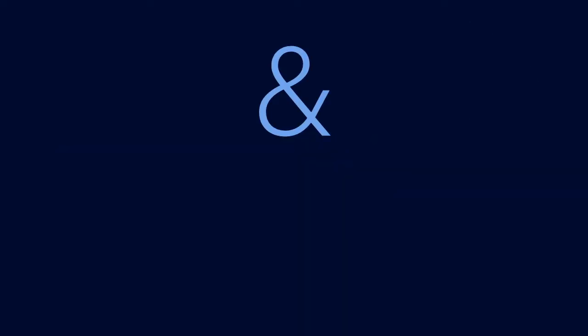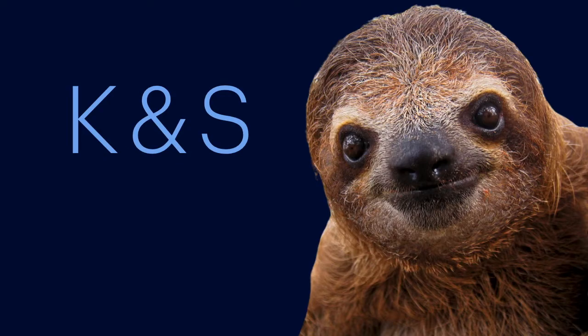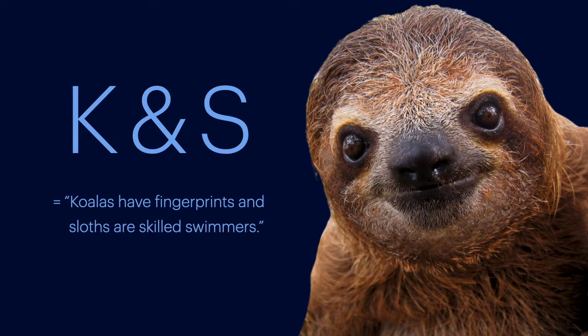This is an ampersand. It stands for the conjunction operator. Depending on your textbook, this symbol, or even this one, might stand for a conjunction operator. It really doesn't matter. Whatever the exact symbol, it stands for the English AND. Thus, we can take the constant K and the constant S and put them together with the ampersand to get koalas have fingerprints and sloths are skilled swimmers.